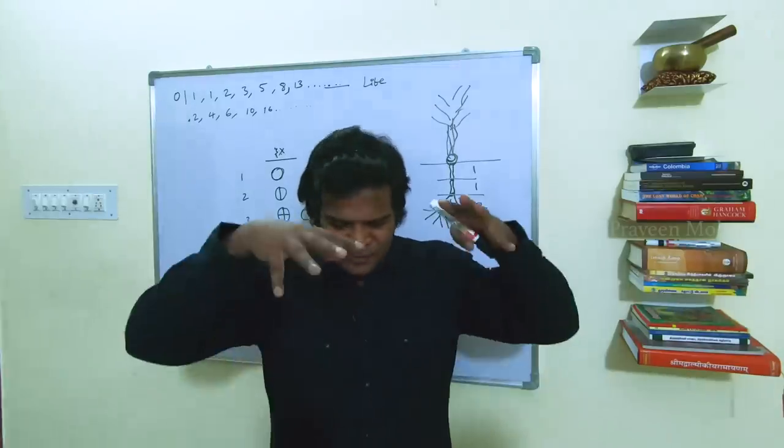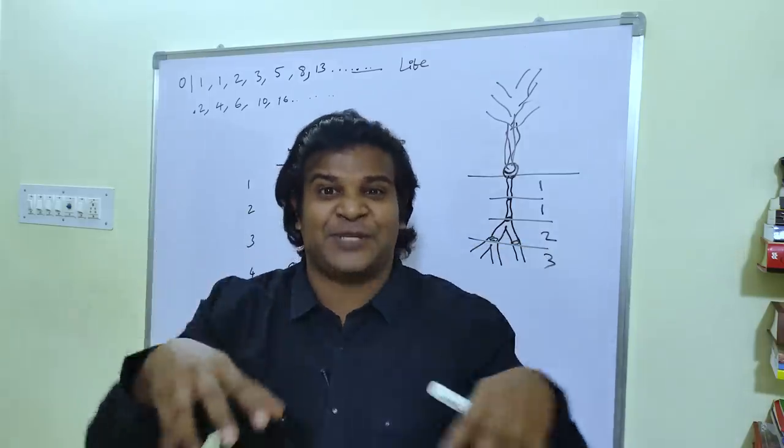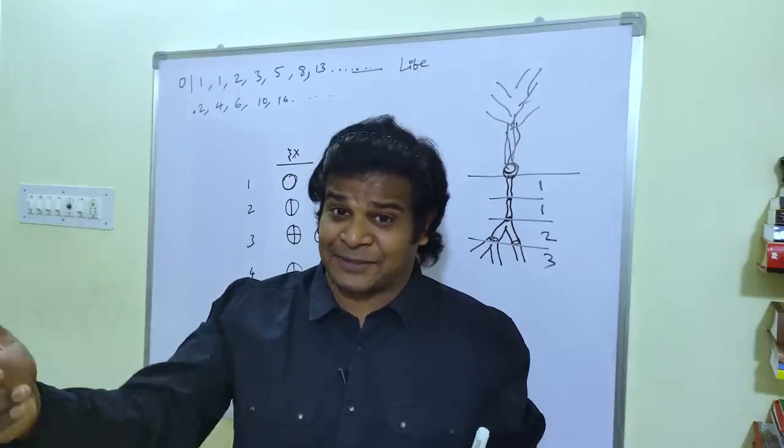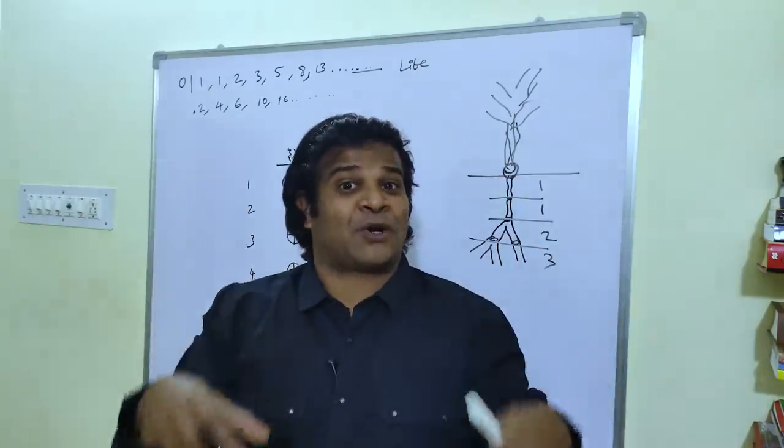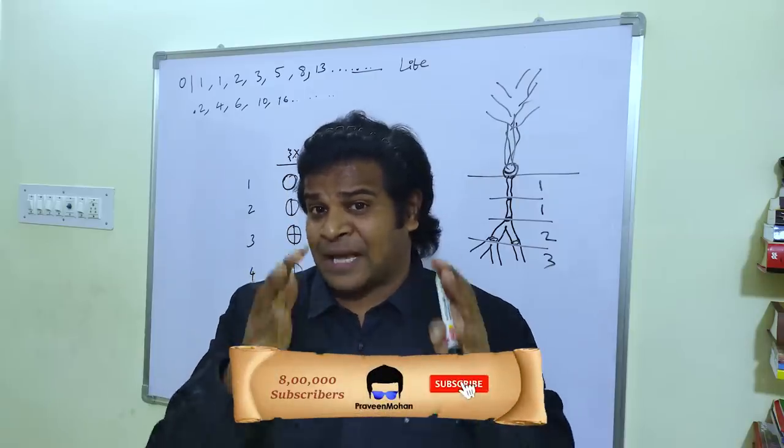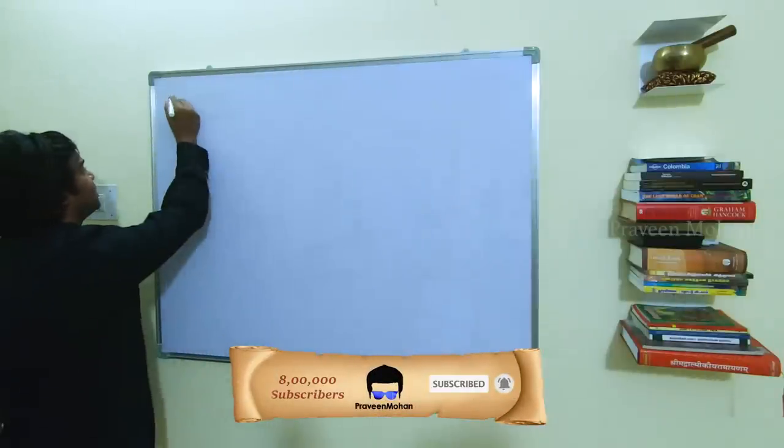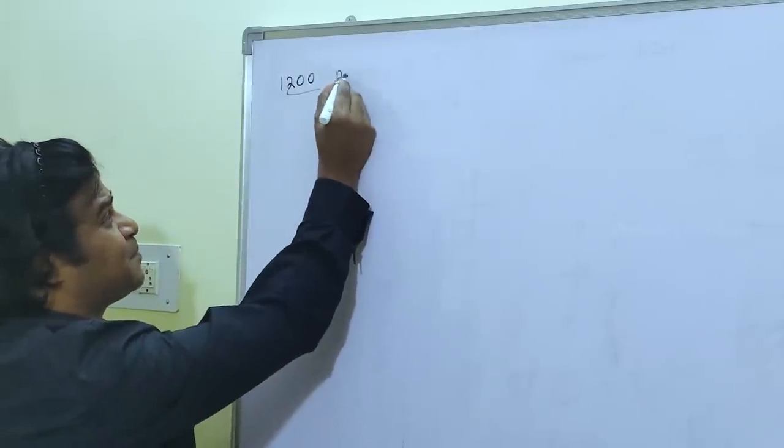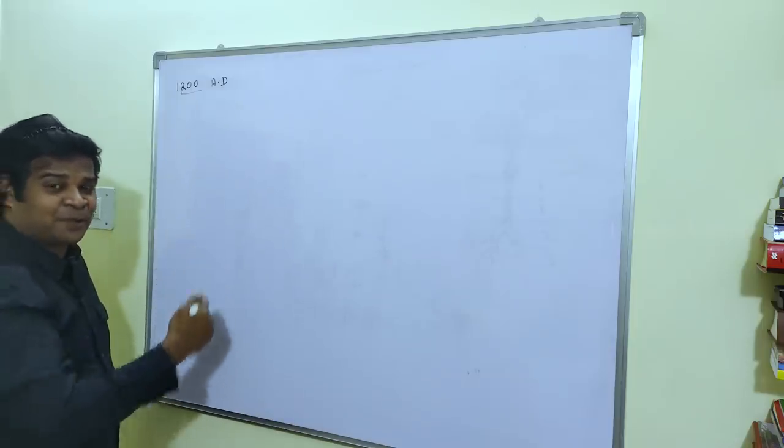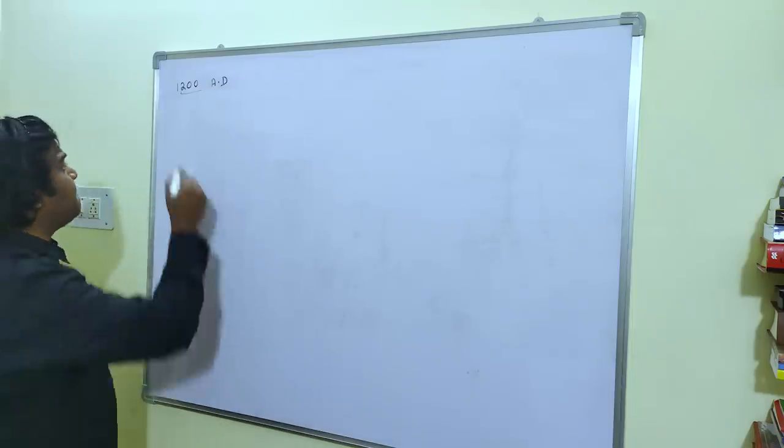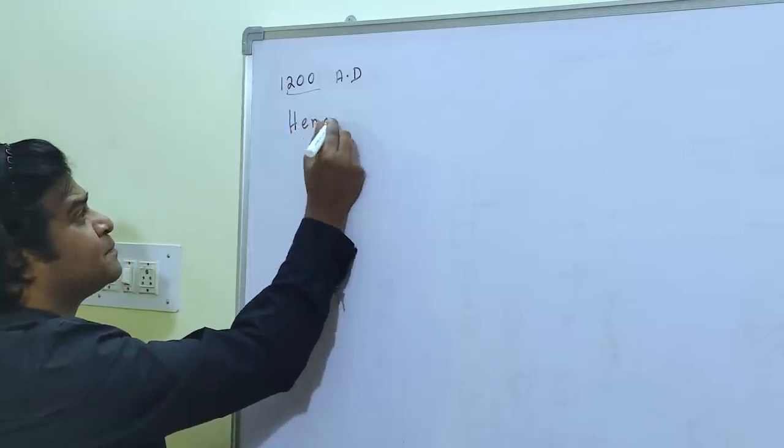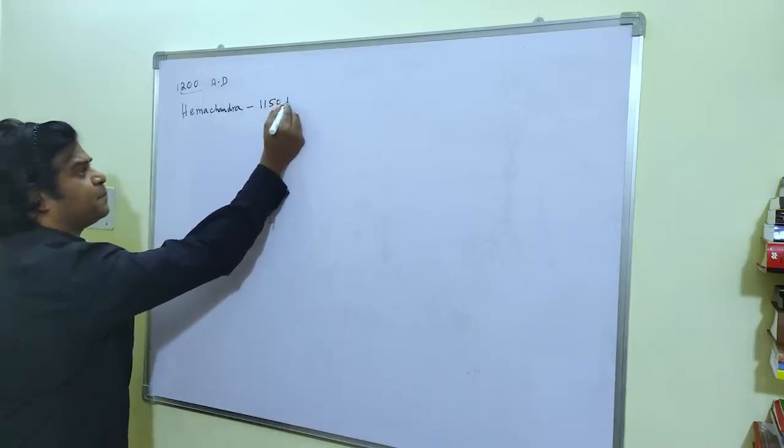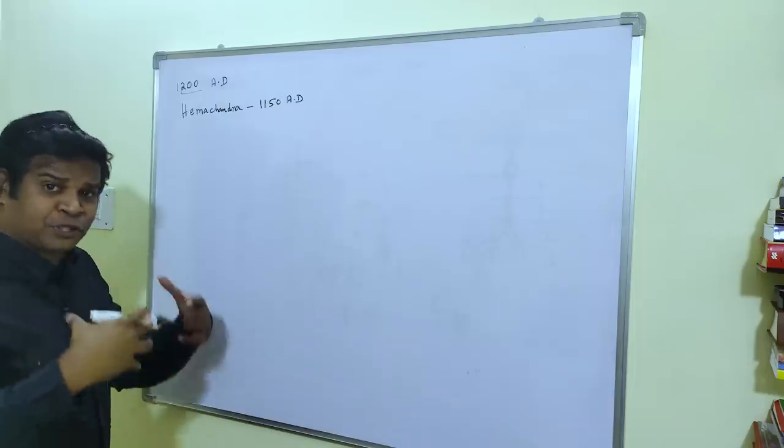But why do I call this amazing number, the Fibonacci number, as a Hindu number? Fibonacci number was discovered 800 years ago by an Italian who was a Catholic. But why do I call it a Hindu number? Let me clear the board and let me explain it to you. So Fibonacci discovered this number around 1200 AD. But 50 years before Fibonacci, there was a great Sanskrit poet in India called Hemachandra.